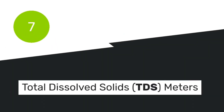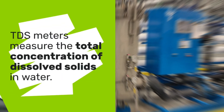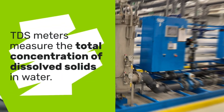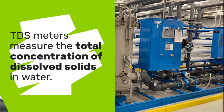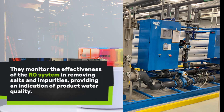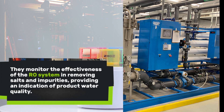Number 7: Total Dissolved Solids (TDS) Meters. TDS meters or TDS sensors measure the total concentration of dissolved solids in the water. They help monitor the effectiveness of the RO system in removing salts and other impurities and provide an indication of the product water quality.